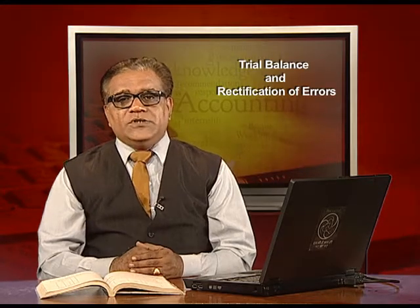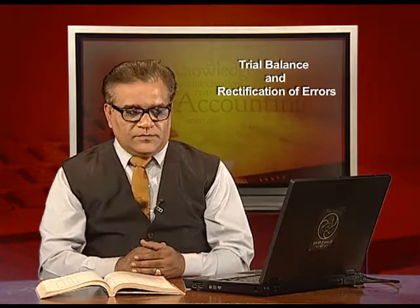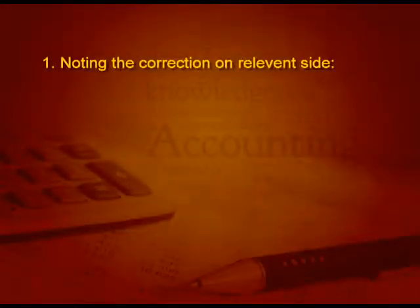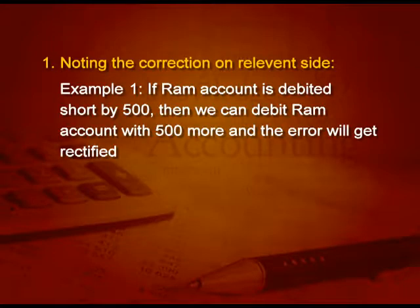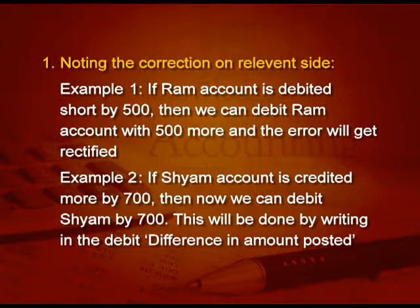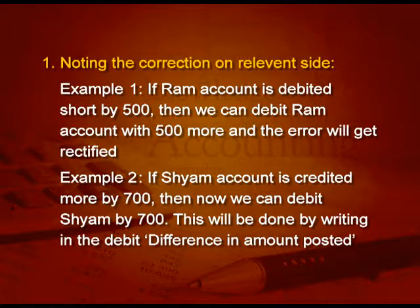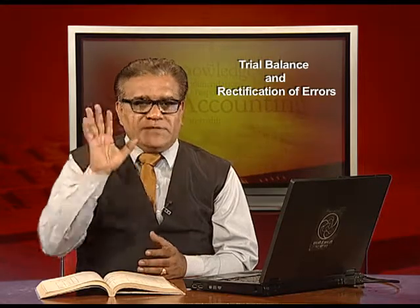Let us see how both these methods work one by one. Starting with the first one — noting the correction on the relevant side. For example, if RAM account is debited short by 500, then we can debit RAM account with 500 more and the error will get rectified. Take another example: if SHAM account is credited more by 700, then we will debit SHAM account so that the credit effect is reduced by writing the debit difference in the amount posted.